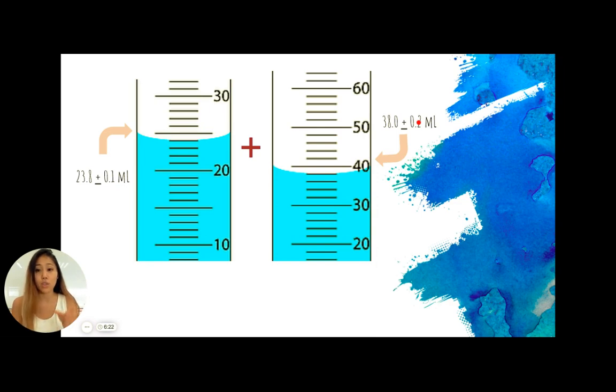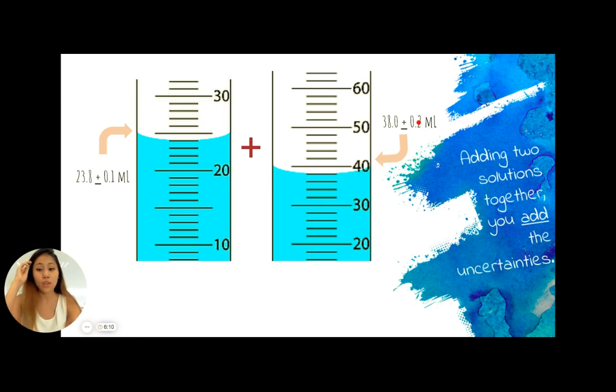In this case, if I want to pour the first one into the second graduated cylinder, I have to add up my two volumes. So in this case, what do I do with my uncertainty? So when you are adding your two values together, you also add the uncertainties.